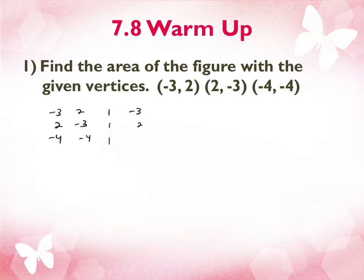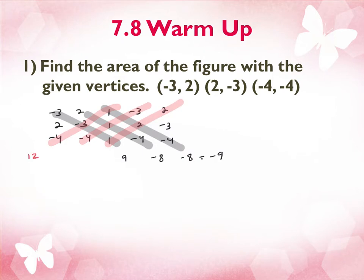So I'm going to add the negative 3, the 2, the negative 4, 2, negative 3, negative 4. Diagonals, top left, bottom right first. So negative 3 times negative 3 times 1 is 9. 2 times 1 times negative 4, negative 8. 1 times 2 times negative 4, negative 8. And I'd get 1 minus 8, which is negative 9. Come back the other way. 1 times negative 3 times negative 4 is 12. 3 times 1 times negative 4, 12 again. 2 times 2 times 1, positive 4. So 24 plus 4, 28.